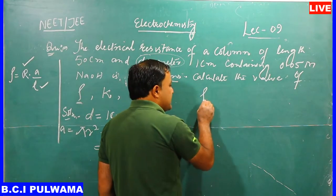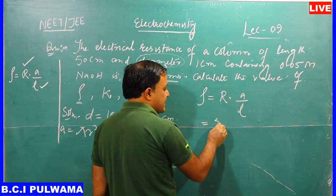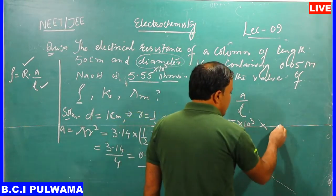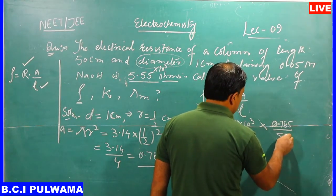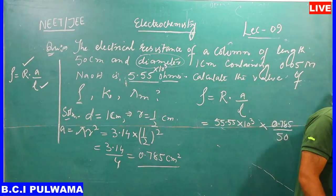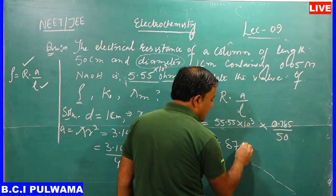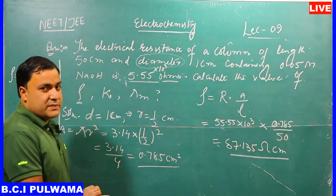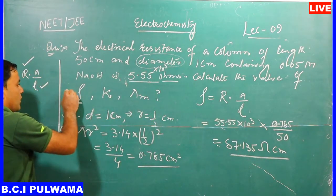Now we calculate resistivity: ρ = R × A / L = 55.55 × 10³ × 0.785 / 50. Solving this gives ρ = 87.135 ohm·cm. The unit is ohm·centimeter, so this is the value of resistivity.